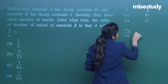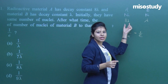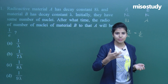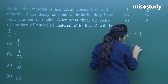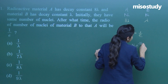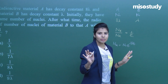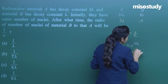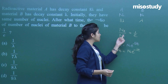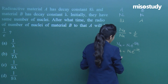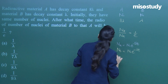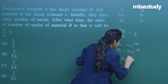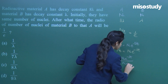Finding N_B, the number of nuclei of B left after time t: N_A equals N-not times e raised to the power minus 8 lambda t, and N_B equals N-not times e raised to the power minus lambda t. Now if I find the ratio N_B upon N_A, it becomes N-not e to the power minus lambda t, divided by N-not e to the power minus 8 lambda t.